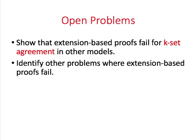It would be interesting to show that extension-based proofs fail for k-set agreement in other models, and also interesting to show that extension-based proofs fail for other problems. Dan Alistard, Yoel Rebicki, and I have recently proved that there is no extension-based proof of the impossibility of cycle agreement in the NIIS model, which then led us to an impossibility proof using combinatorial topology. Thank you for watching this talk.